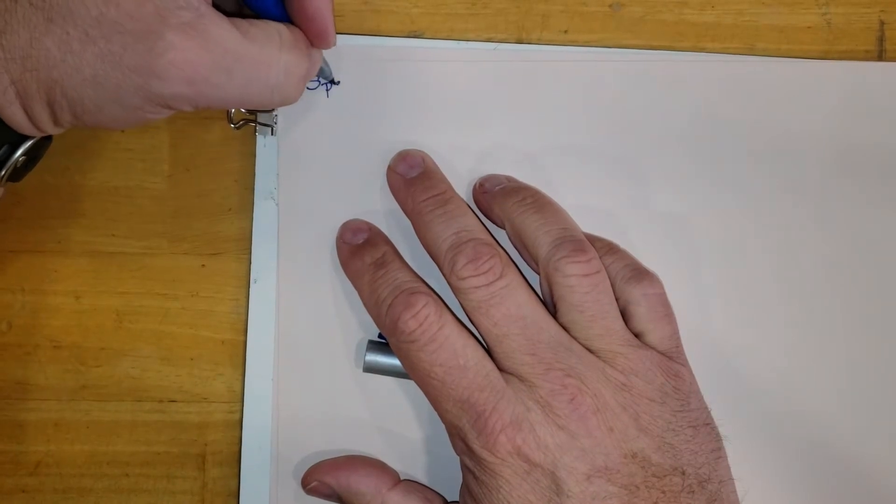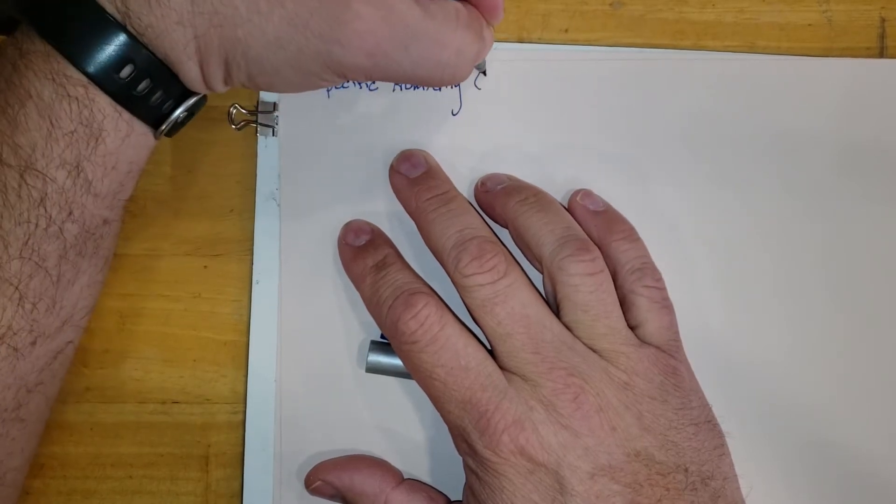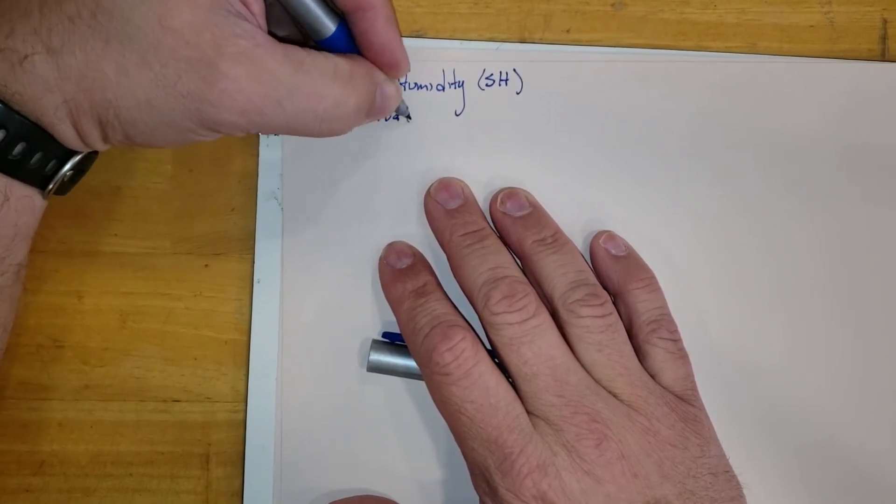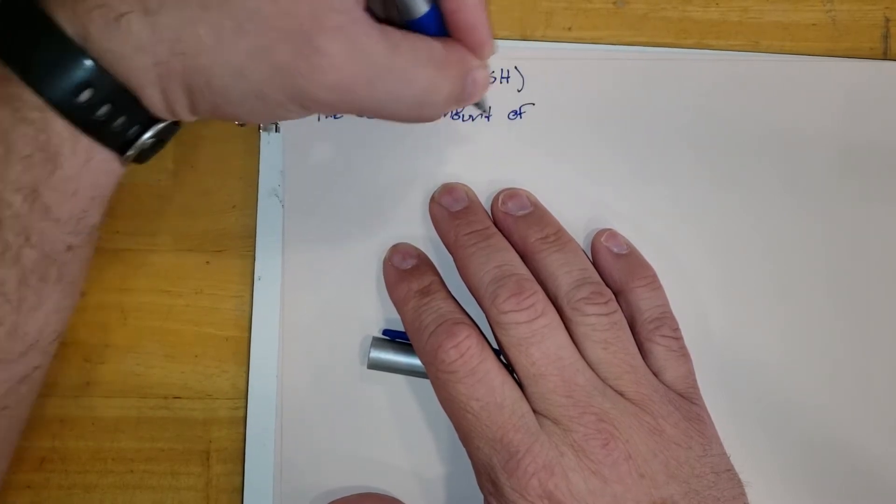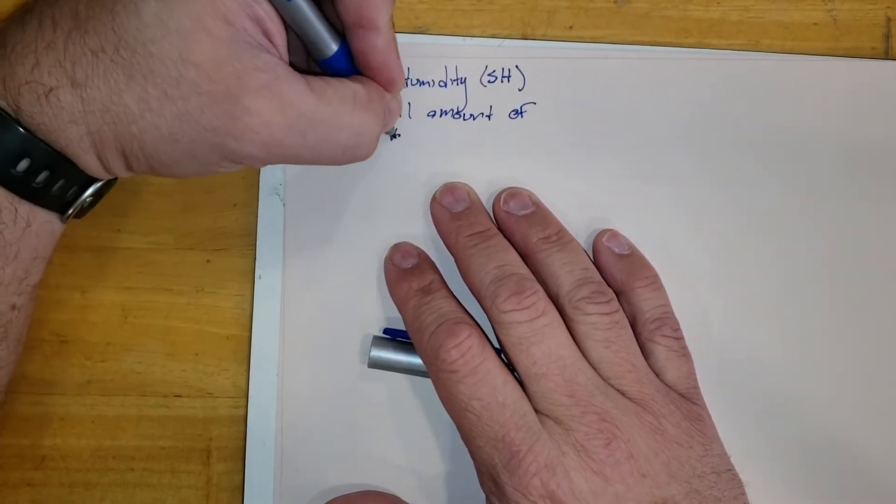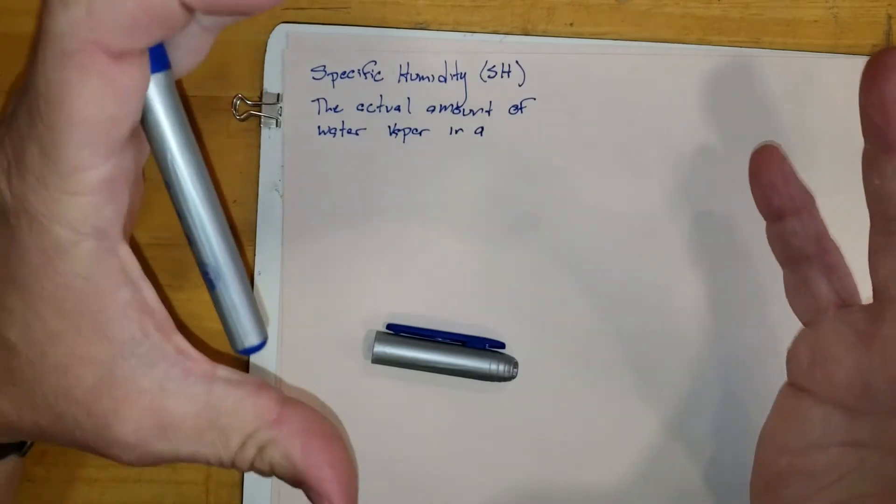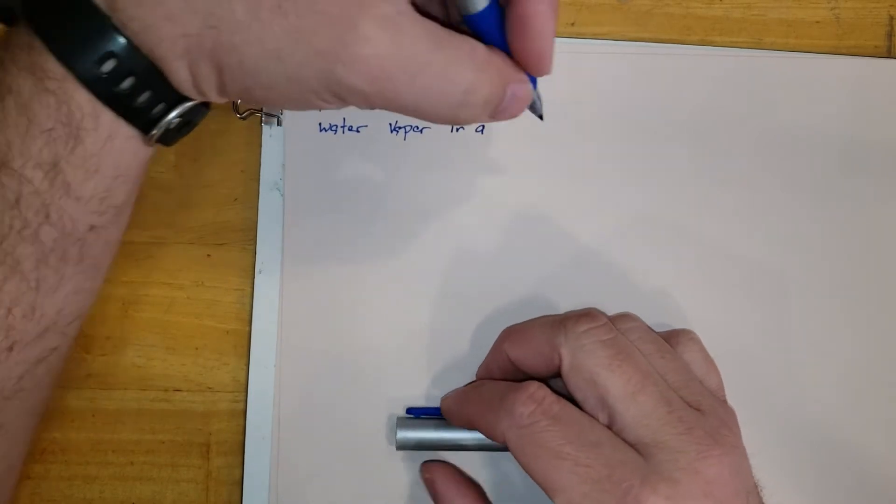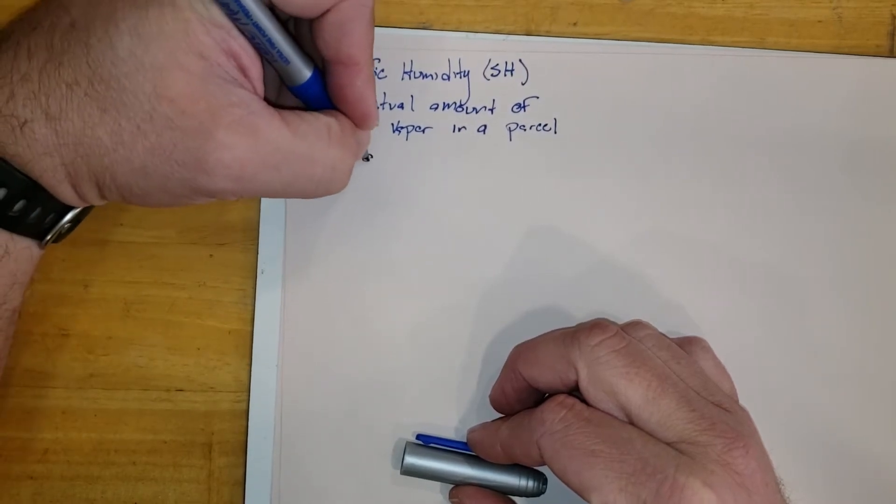The first thing I want to talk about is the specific humidity, abbreviated SH. Specific humidity is the actual or specific amount of water vapor, and I like to think about my air kind of enclosed because as we start to do the math, we're going to have to look at the temperature and all sorts of things like that. So the actual amount of water vapor in a parcel of air.